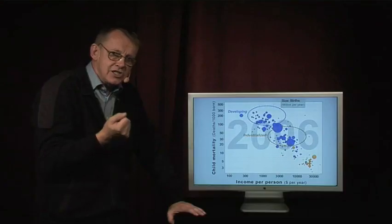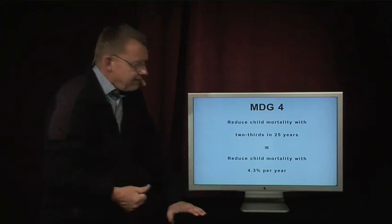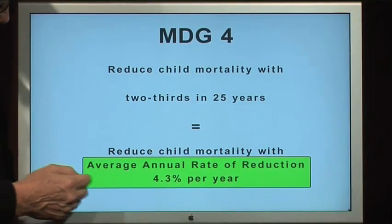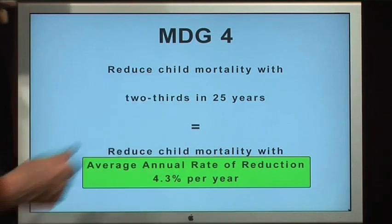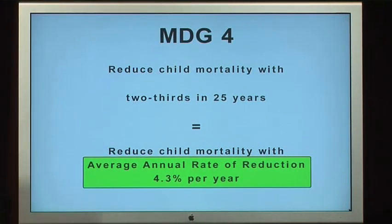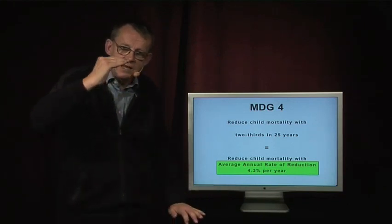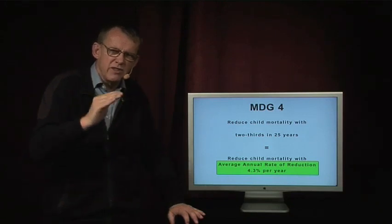How fast did that change take place? Millennium Development Goal number 4, specified by the United Nations, calls for lowering child mortality by two-thirds in 25 years — in one generation. A modern way to measure this is the average annual rate of reduction, measuring child mortality change in percent per year, the same way we measure economic growth. The aim is to lower child mortality by 4.3% — more than 4% — per year.